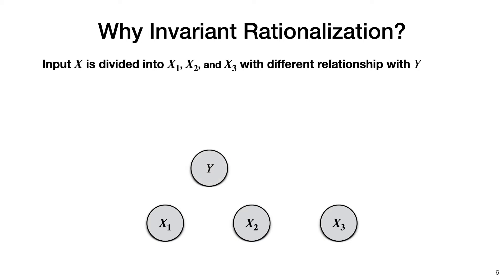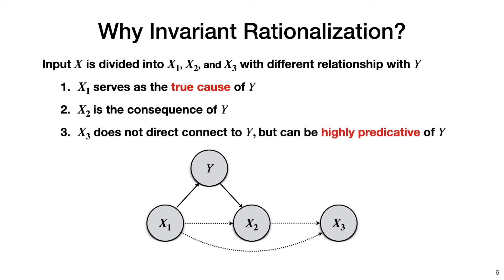In particular, x1 is the causal explanation of y, x2 is the consequence of y. Finally, x3 does not have a direct connection with y, but it can still be highly correlated with y because it is correlated with x1 and x2.